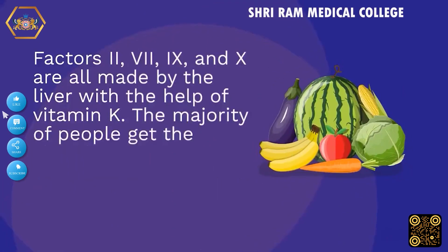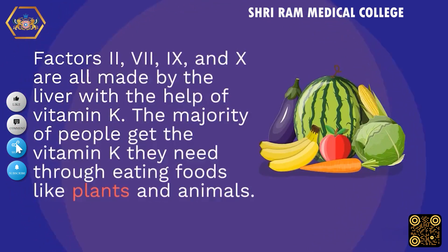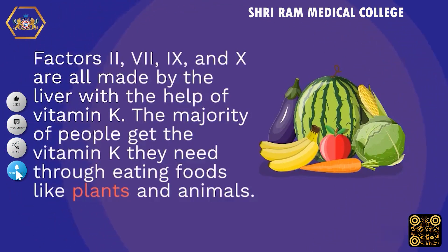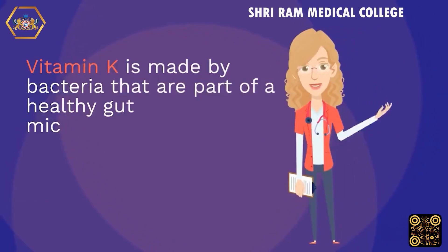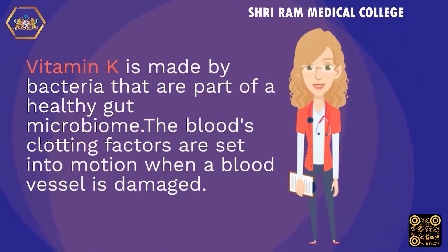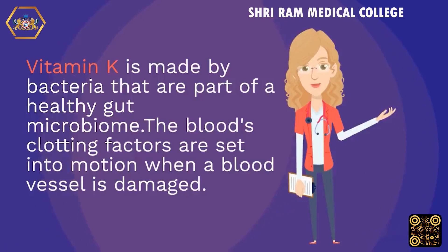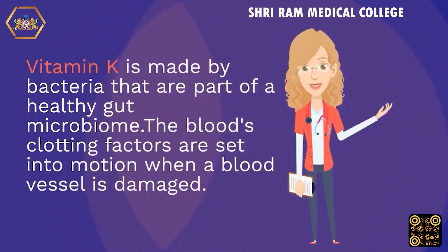Factors II, VII, IX, and X are all made by the liver with the help of vitamin K. The majority of people get the vitamin K they need through eating foods like plants and animals. Vitamin K is also made by bacteria that are part of a healthy gut microbiome. The blood's clotting factors are set into motion when a blood vessel is damaged.